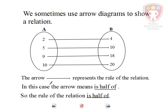So in this case, the arrow represents the rule of the relation. And the arrow in this case means is half of. Yes, it makes sense because 2 is half of 4. So here the arrow means is half of.